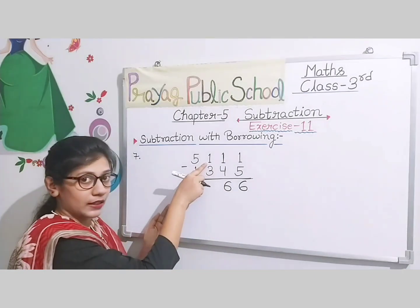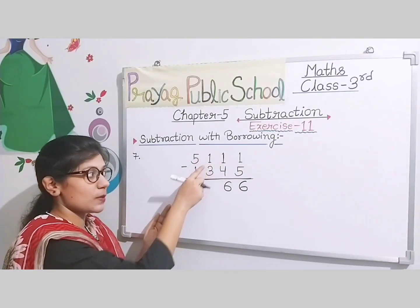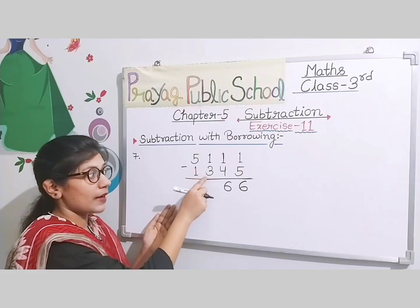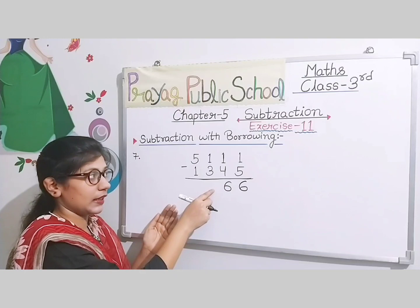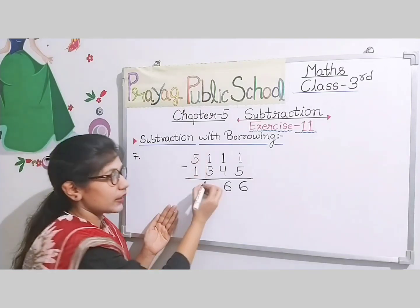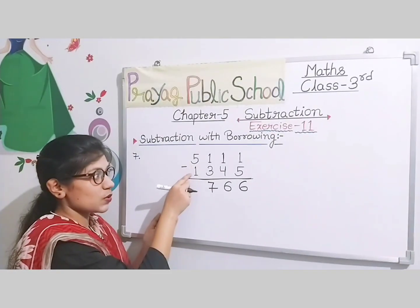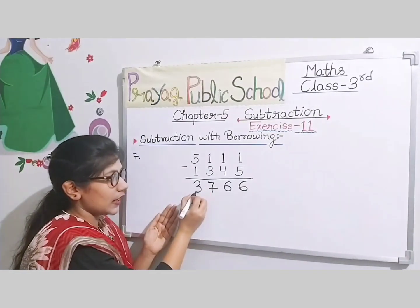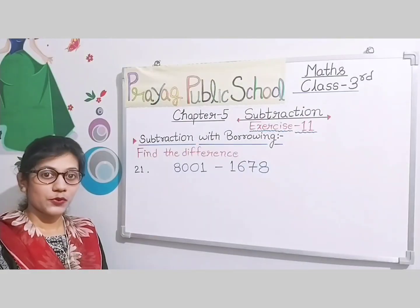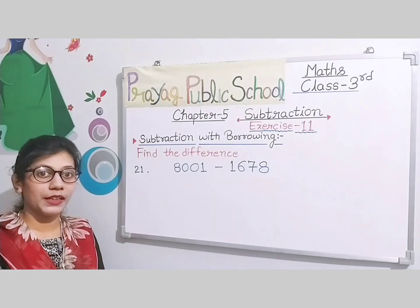Ab yaha 1 hai — isne borrow diya tha, now this is 0. 0 mein se 3 ka subtraction nahi ho ga. We take borrow: 10 minus 3 we get 7, and this is 4 — 4 minus 1 we get 3. The answer is 3766. So students, Exercise number 11 ke question number 1 se question number 18.